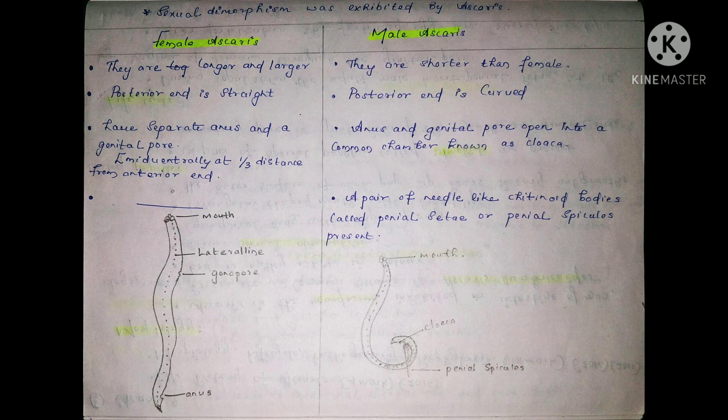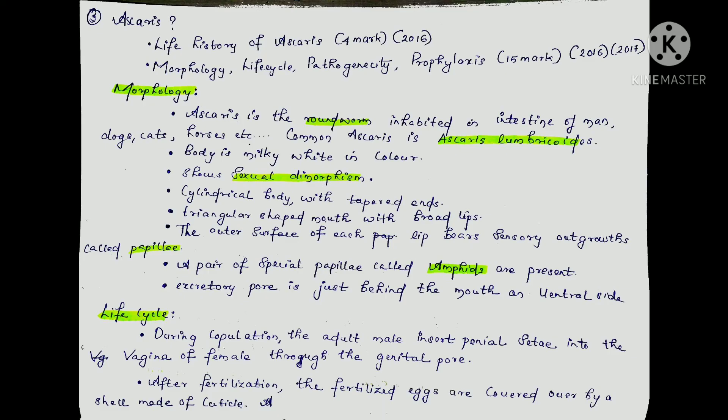Now this covers sexual dimorphism in Ascaris. Next, we will start with Ascaris: Life History, Morphology, Pathogenesis, and Prophylaxis. Ascaris questions carry 1 to 4 marks. The life history and life cycle are important. In this essay, we will cover Morphology, Life Cycle, Pathogenesis, and Prophylaxis of Ascaris.